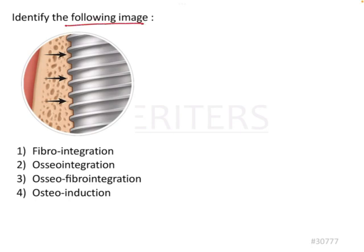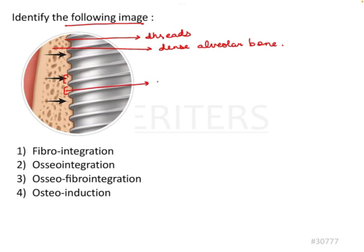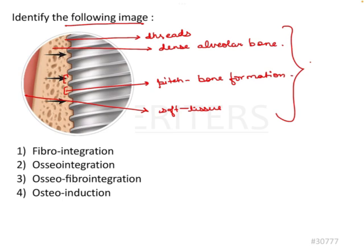Identify the following image. This is an implant-based question. We can see in the image implant threads. There is good dense alveolar bone. They are pointing towards these areas. In the buttress or in the pitch there is good bone formation. Towards the side there is some soft tissue. All this consolidates to an endosseous implant, meaning it is present in the bone, in the alveolar bone.